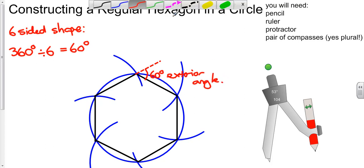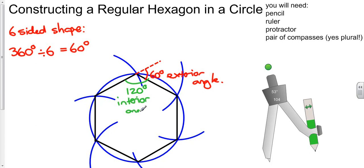We can also identify the interior angle, and angles on a straight line tells us that that will be 120, and that's the interior angle of a regular polygon.